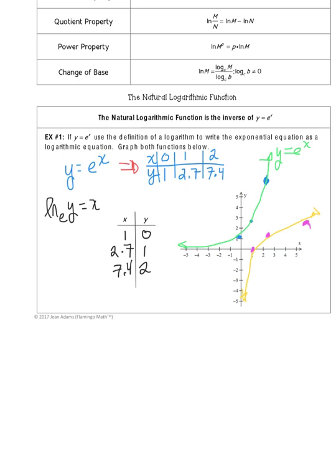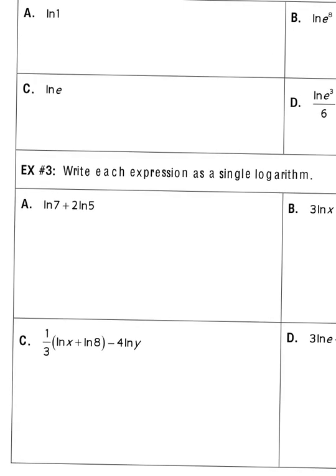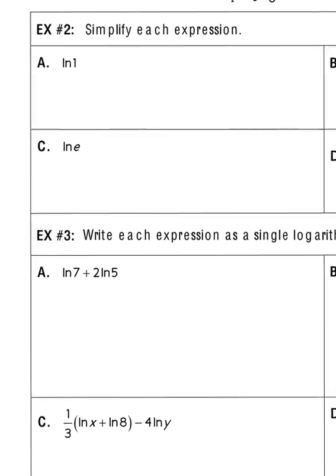These two graphs are reflections of each other because they're inverses, reflected over the y equals x line, so they should fold right on top of each other. Let's do some problems related to natural logs — you'll find they're identical to regular log problems, so I'm going to zip through these pretty quickly.